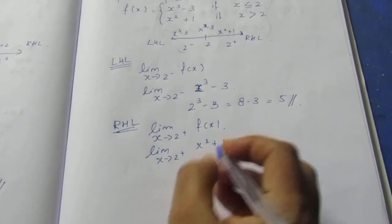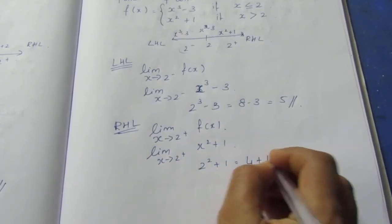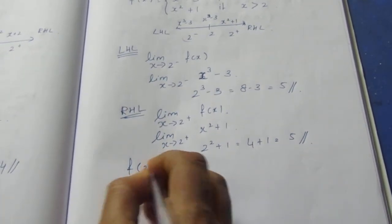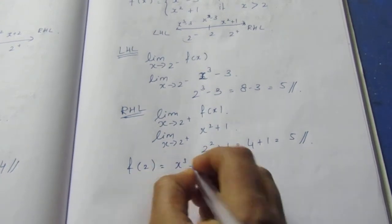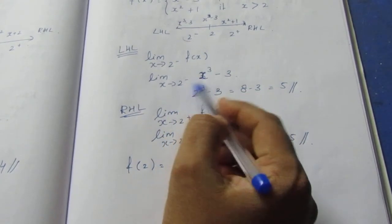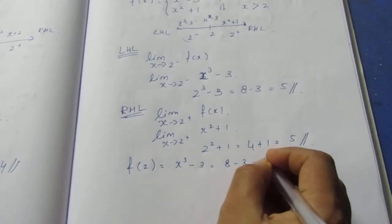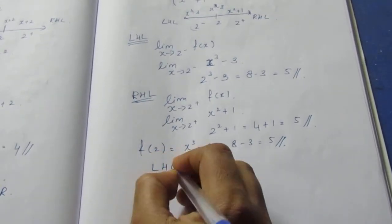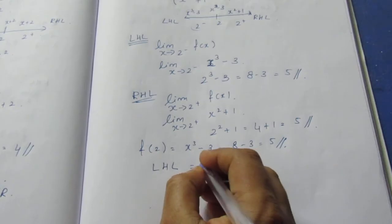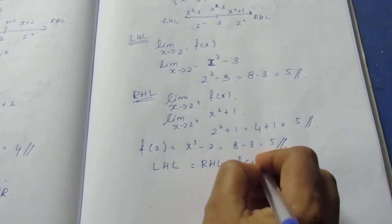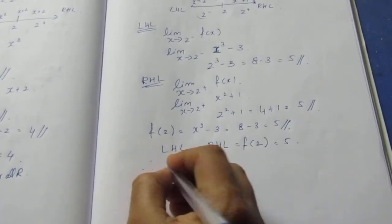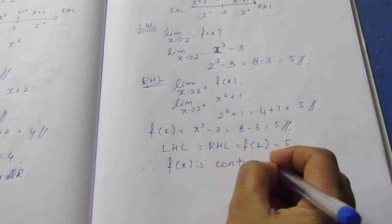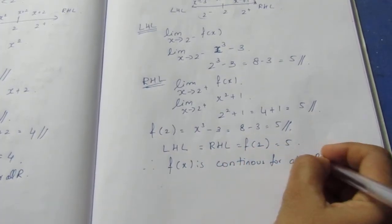We substitute. We substitute f(x), which is x cube minus 3. We substitute for f(2), x cube minus 3. This holds for all values of real numbers.